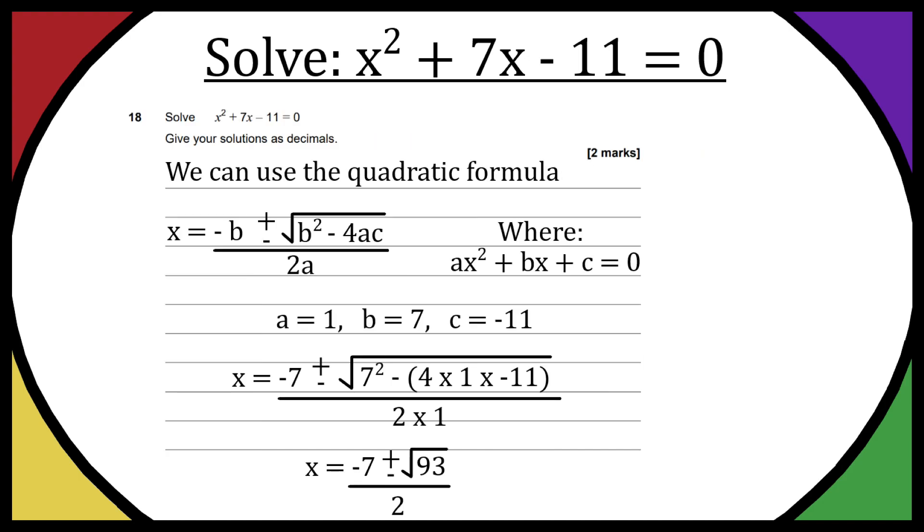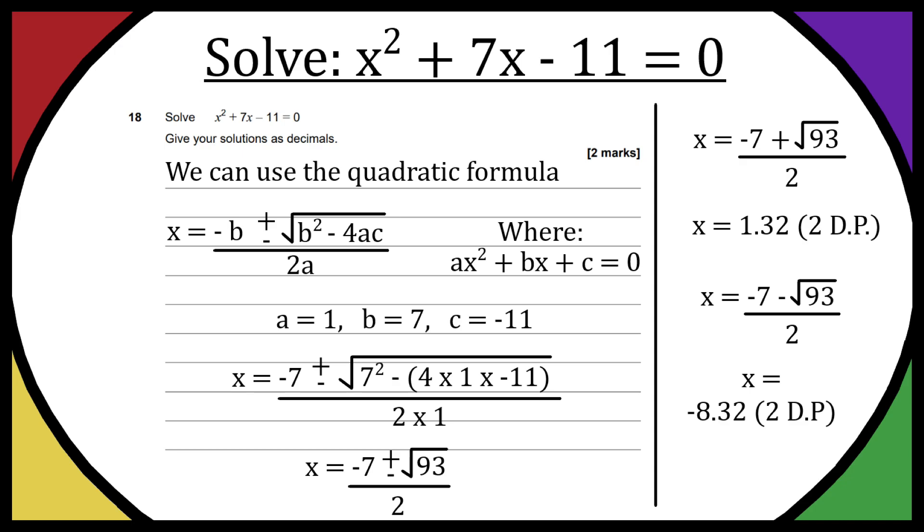Let's go through one at a time and give our answers as decimals just like they asked in the question. x = (-7 + √93) / 2, which as a decimal to two decimal places is 1.32. The next one is x = (-7 - √93) / 2, which to two decimal places is -8.32.